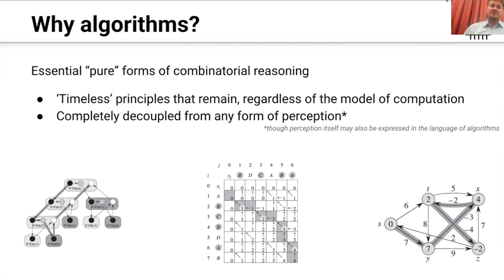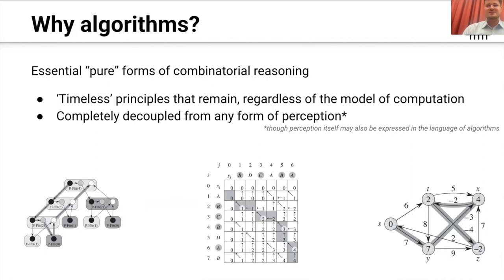Now that we have the general idea of an algorithm, we might wonder why we should care about algorithms so much as deep learning researchers. I see algorithms as essential pure forms of combinatorial reasoning, because they're so vaguely specified and should work no matter what the underlying domain is — a principle that remains regardless of the model of computation. Whether you do your computation on a CPU, GPU, TPU, or in the future on quantum computers, we'll certainly still be using algorithms to talk about computations in this space.